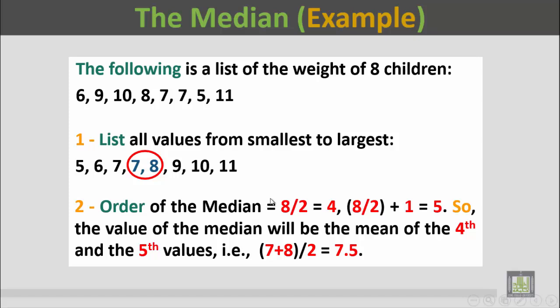So the order of the median will be 8 by 2, that's 4, and the next value 5. So the median will be between the fourth and the fifth. The fourth value here is 7 and the fifth value is 8. The median lies between 7 and 8. To calculate the value of the median, we will add 7 plus 8, that's 15, and then divide by 2, that's 7.5.